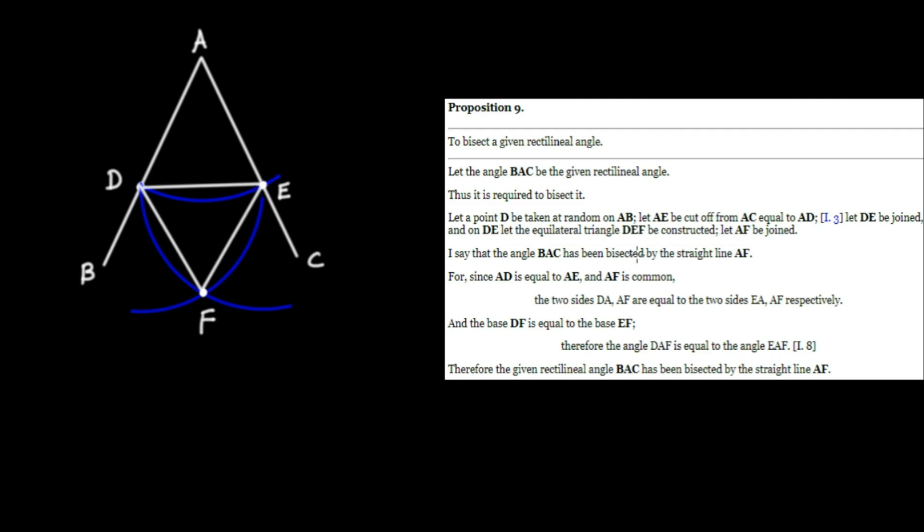And finally, let AF be joined down to F. Simply use our straight edge to do so. And that completes the construction. Now we're going to prove that the construction does what he claims it does. Namely, that this line segment here bisects the angle BAC. I say that the angle BAC has been bisected by the straight line AF.